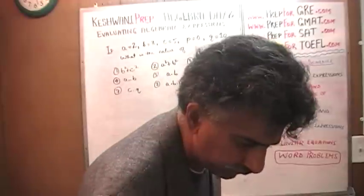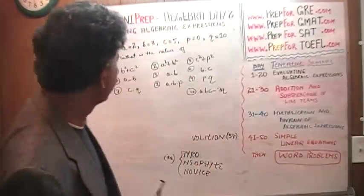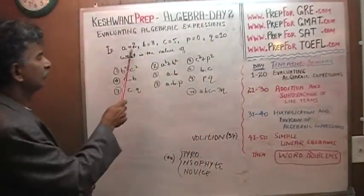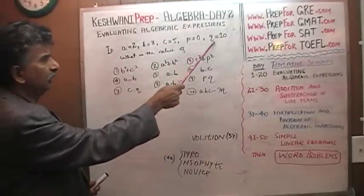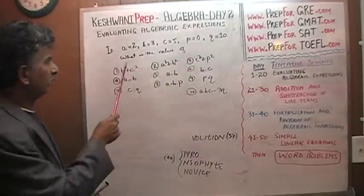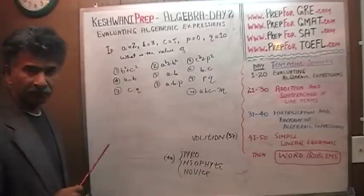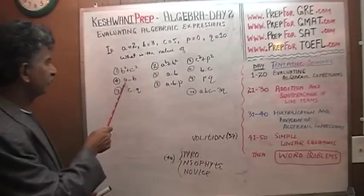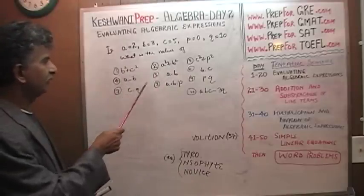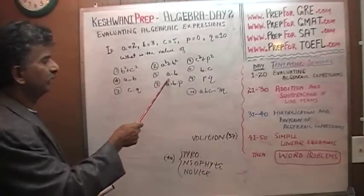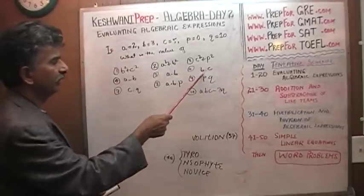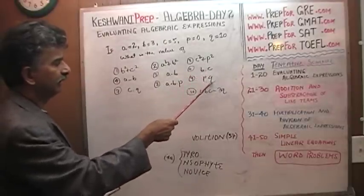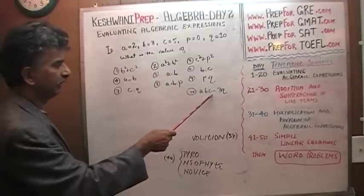It says if a equals 2, b equals 3, c equals 5, p equals 0, and q equals 10, what are the values of the following expressions: b squared plus c squared, a minus bc times q, a squared plus b squared, a times b, a times b times p, c squared plus p squared.